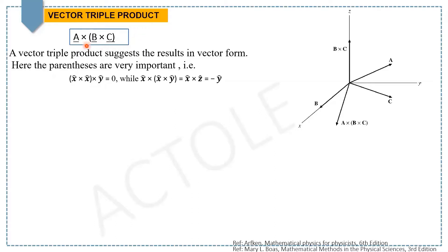For a given set of three vectors A, B, and C, the cross product of one vector with the cross product of the other two is called vector triple product. As the name suggests, the result of A × (B × C) gives a vector quantity.